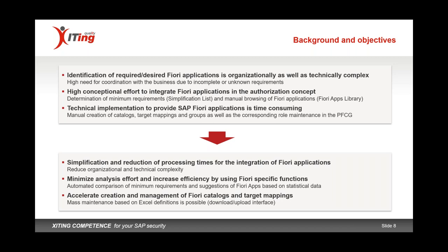Once we know what Fiori apps we want to use, we have to technically implement them — building catalogs and groups, or if you're on S/4 2020, pages and spaces. That's a lot of work. In the last few webinars we talked about the different tools from the Content Manager, the App Manager, and the Launchpad Designer that we can use to create catalogs, make the relationship between a tile and a target mapping to a catalog, and then bring those into a group so the user has it on the launchpad.